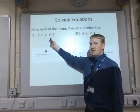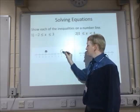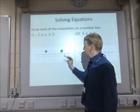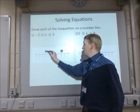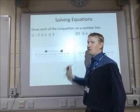And the same for the 3. Whenever it's got the or equal to sign, that circle should be shaded in. Now because x is in between the two numbers, we just join those up with a straight line.